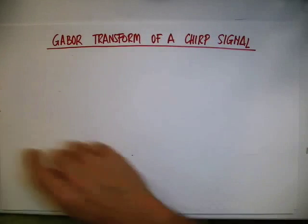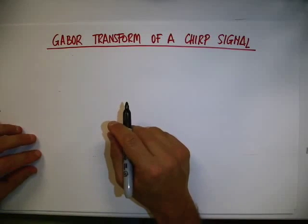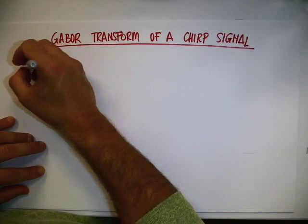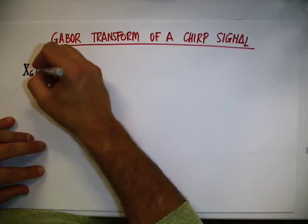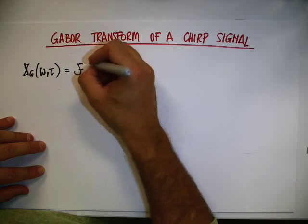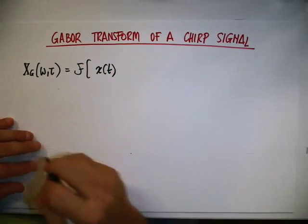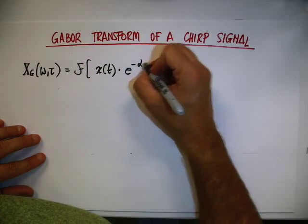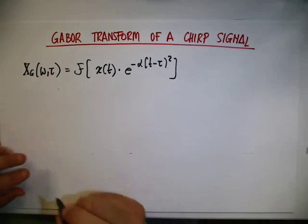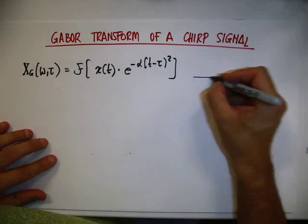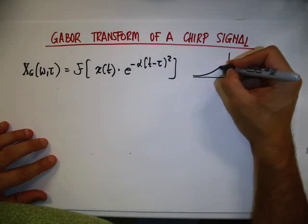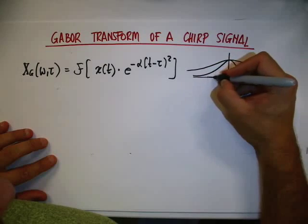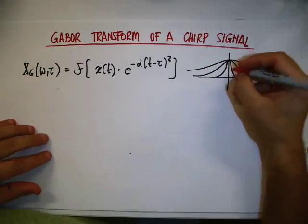Let's compute the Gabor transform of a chirp signal. The Gabor transform of a signal is equal to the Fourier transform of the signal times e to the minus alpha (t minus tau) squared. In this case, the window is a Gaussian bell.